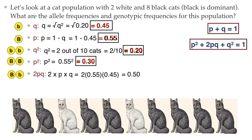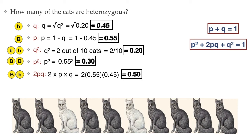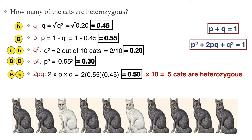Sometimes the question may not ask for the frequency, but for a specific number of individuals with a particular genotype — like, how many of the cats are heterozygous? To do that, you take the genotype frequency and multiply it by the number of individuals. So in this case, 0.5 times 10 tells us that 5 of the cats are heterozygous.